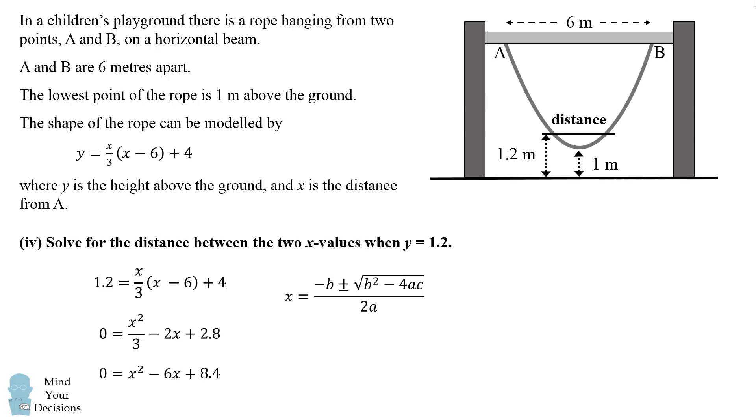But before we substitute in the values, we want to find the distance between them. So we can write out the two different x values. One of them will be the positive square root and the other will be the negative square root. And we want to find the difference between them.